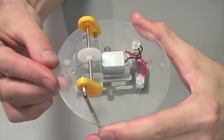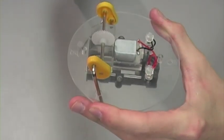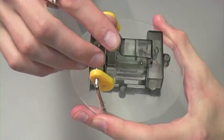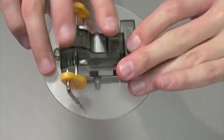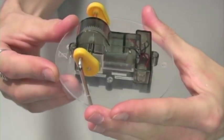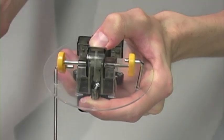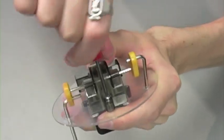For step five, we're going to take our motor cover, placing the large end over our gears so that it locks into place. Secure the motor cover with two of the small screws.